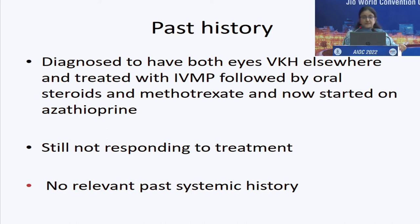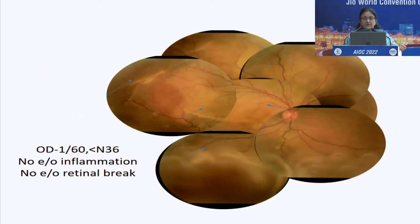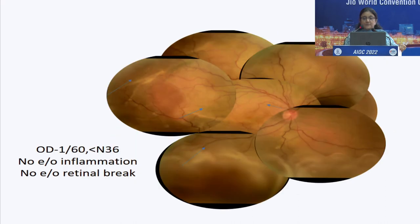The fundus of the right eye showed exudative retinal detachment with extensive subretinal gliotic bands. Vision was as low as 1/60 with no evidence of inflammation, probably taken care of by high-dose steroids and immunosuppressants. We could not find any retinal break, so rhegmatogenous RD was out of question. The left eye also had very extensive exudative detachment with vision of 6/24 N18.